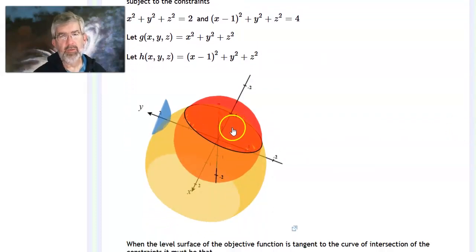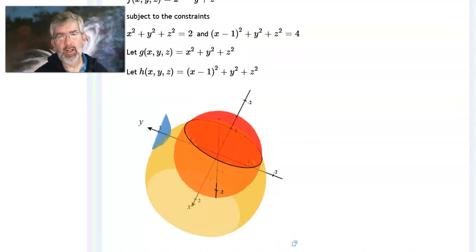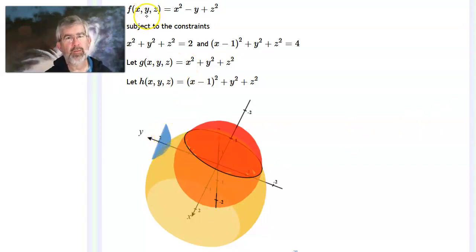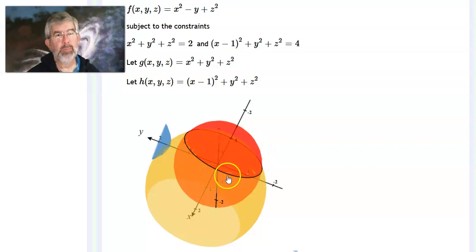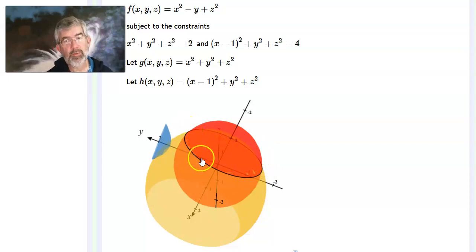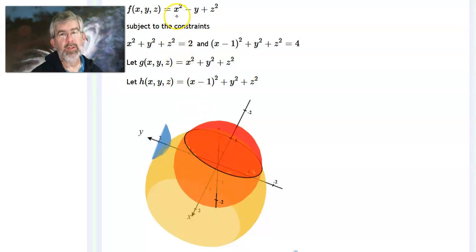Here's the picture. The red is the first constraint, the yellow is the second constraint, and the blue surface is one level surface of the function f. In black is the set of points satisfying both constraints — the two spheres intersect in a circle, which is this black curve. I'm really only interested in those points and which ones give the minimum or maximum value of f.